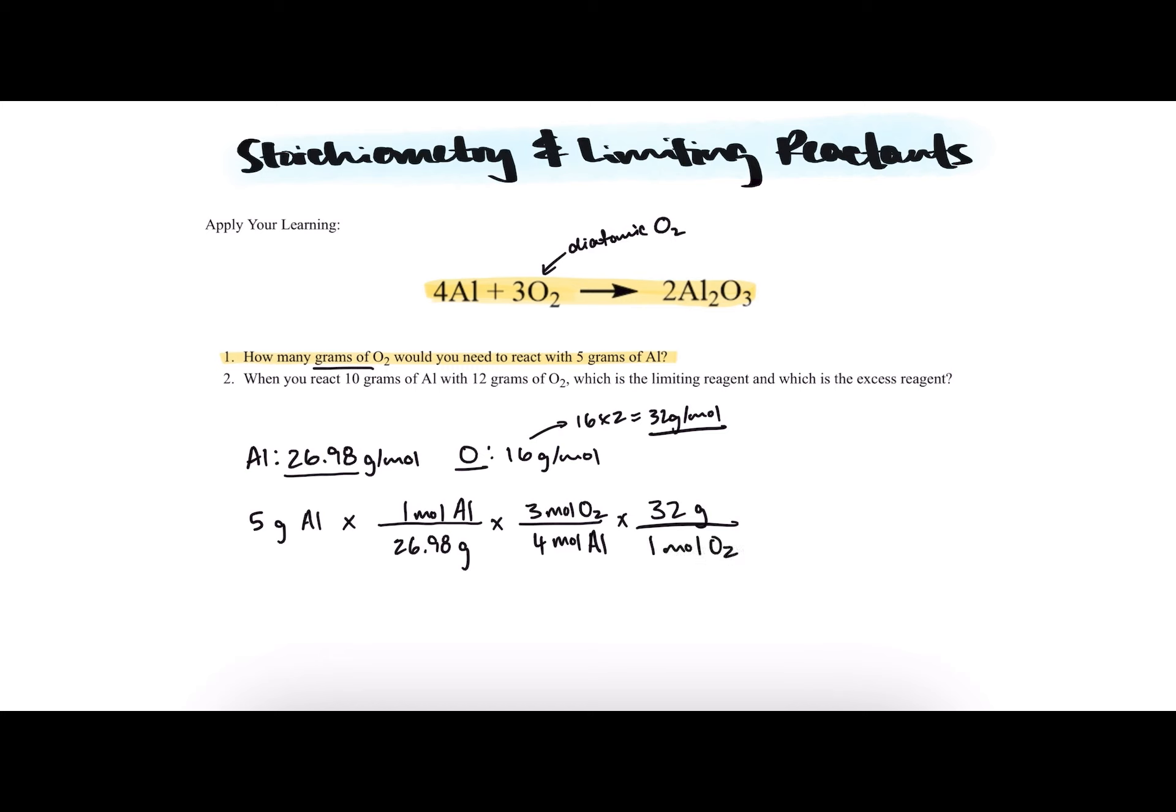And when we plug this all into our calculators, we will find that we would need 4.45 grams of O2 to react with 5 grams of aluminum.